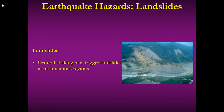Landslides are another consideration. They are triggered by ground motion from an earthquake — if a slope is previously weak, it will fail. Over half of earthquake deaths in Japan are due to landslides, and many people have been killed by earthquake-triggered landslides in the past.